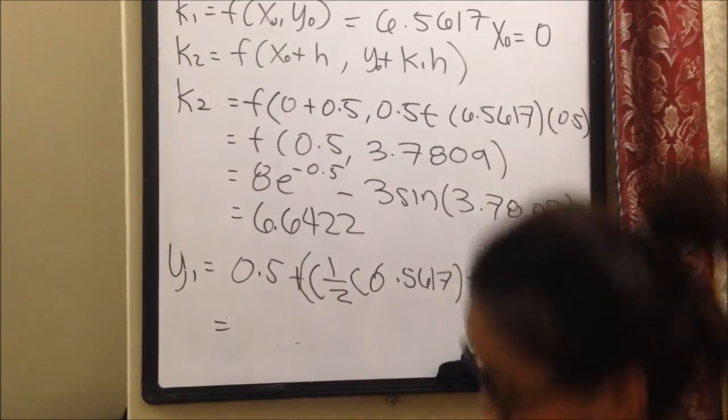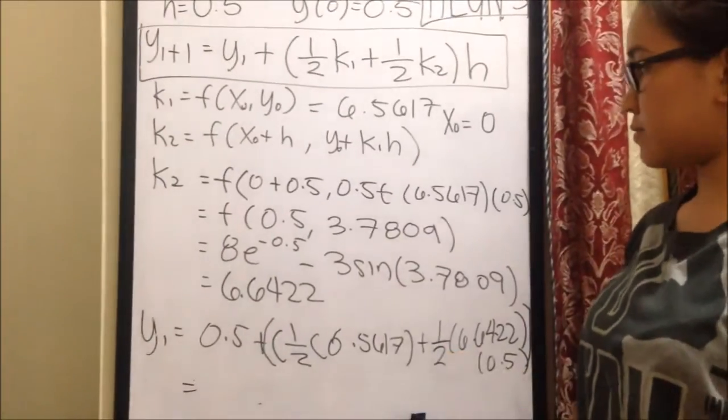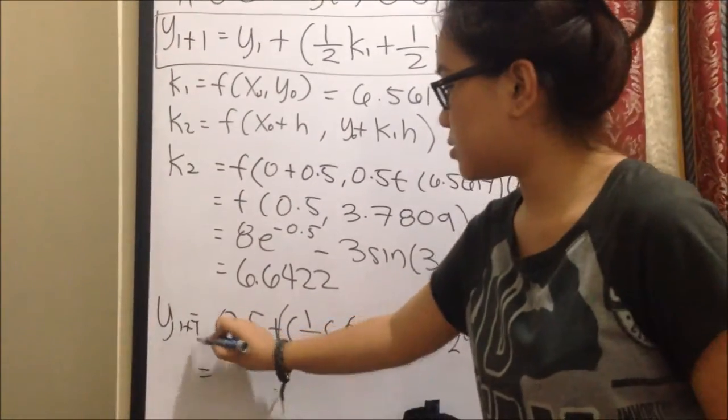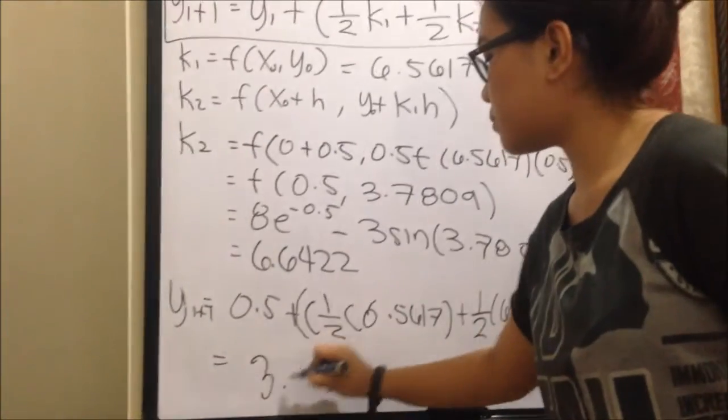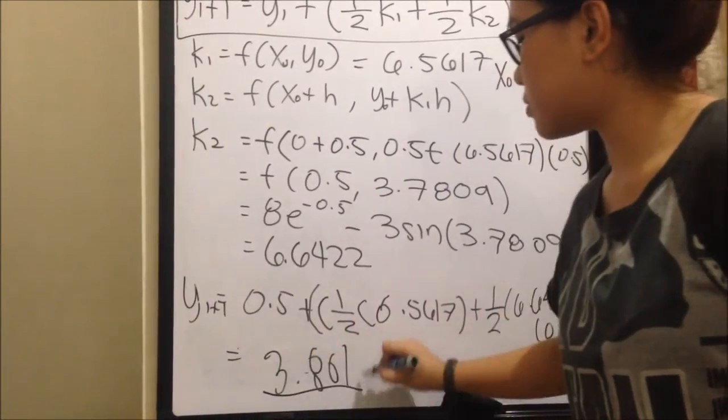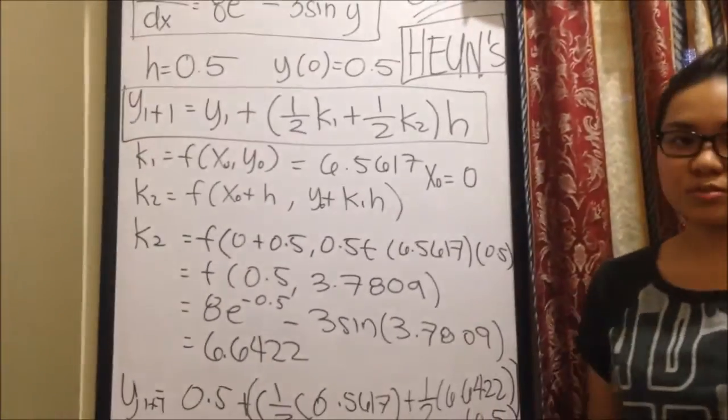So, the value for YI plus 1 is... YI plus 1 is equal to 3.801. So, that's it for the Heun's method.